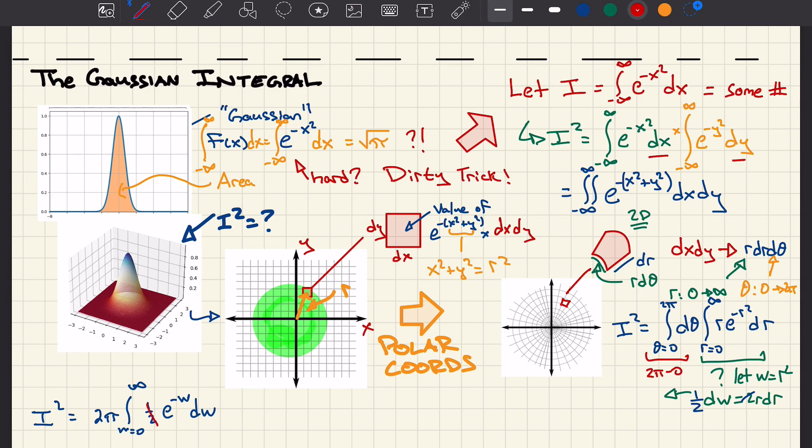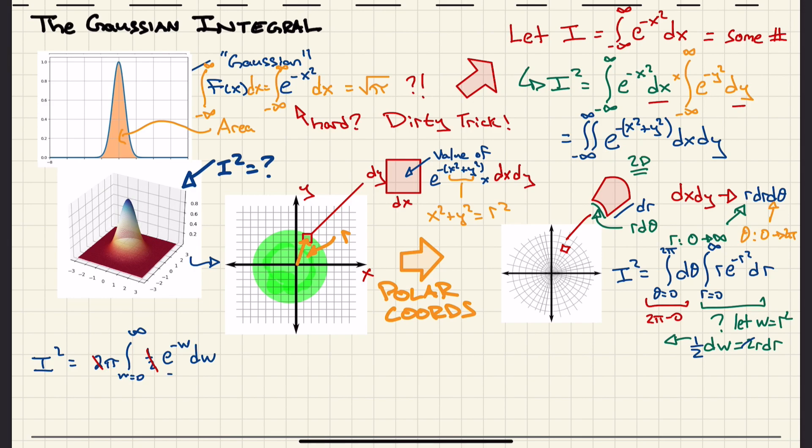The 2's are going to cancel, and this integral e to the minus w is quite simple. It's just e to the minus w with a negative sign out front. Evaluating it at its end points we get minus e to the minus infinity minus minus, so plus e to the 0 which is 1, and this whole integral is just 1 out front.